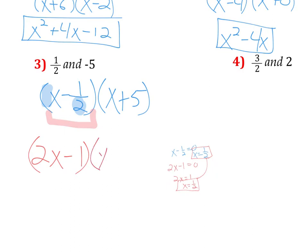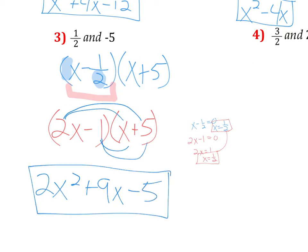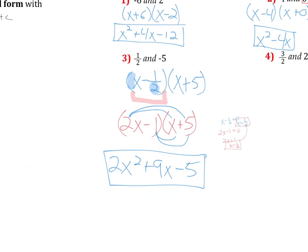Now that we have that out of the way, this is what my factors should look like. And we just need to do some distribution. So we're going to have 2x squared. And then we're going to have a 10x, right? 2x times 5, 10x and a negative 1x. So that's going to be 9x. And then negative 5 at the end.